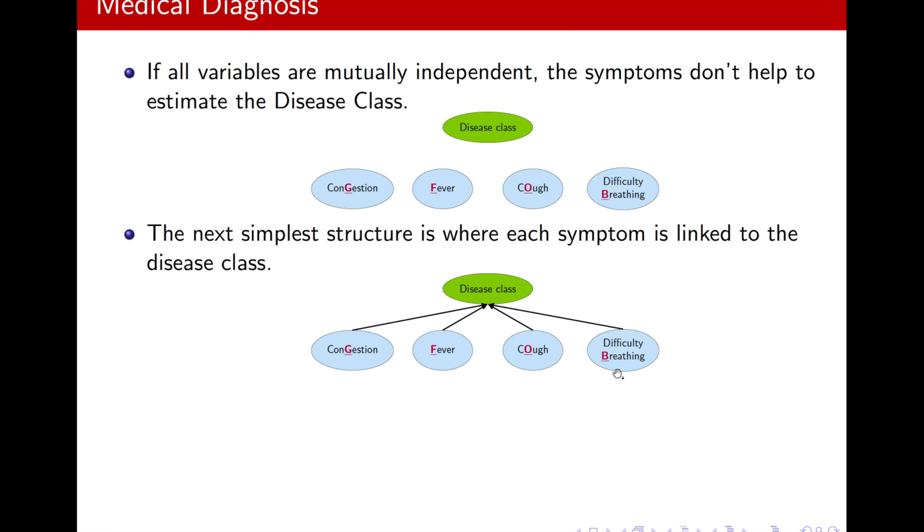So I will just have 32 variables for this disease class. And here, I just have four symptoms. Now, imagine if I had more. Okay? So this can lead to a huge CPD for the disease class.